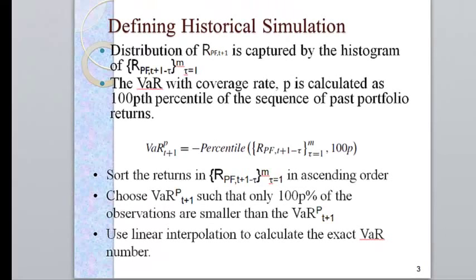How do we define historical simulation? It's pretty easy. We take past returns. In this formula, RPF are the returns of the portfolio from tau equals 1 to M. Since this is minus tau here, it's the past M returns. If we have one year, it would be 250 returns. If we have 10 years, it would be 2,500 returns.